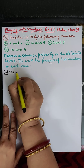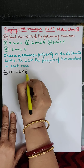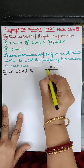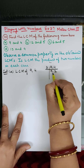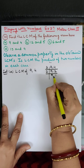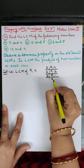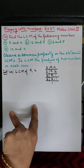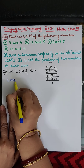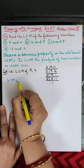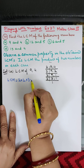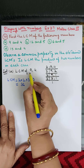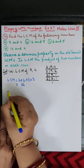Part A: LCM of 9 and 4. We write 9 and 4. Dividing: two twos are four, nine is here; again two ones are two, nine is here; then three threes are nine and three ones are three. So the LCM is two into two into three into three.